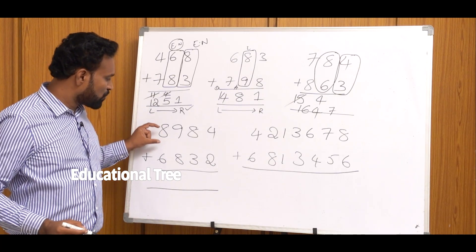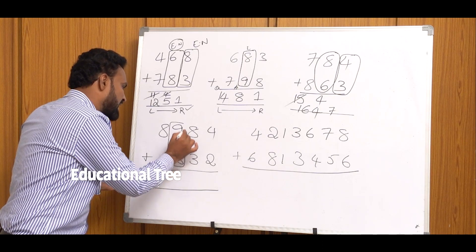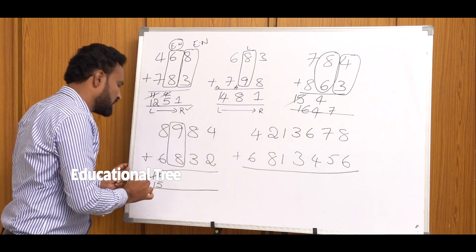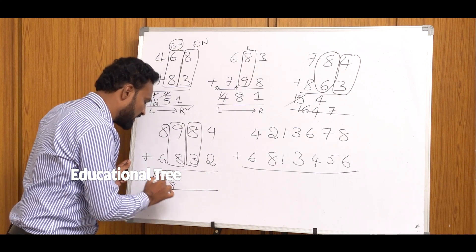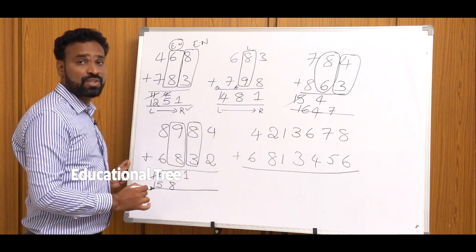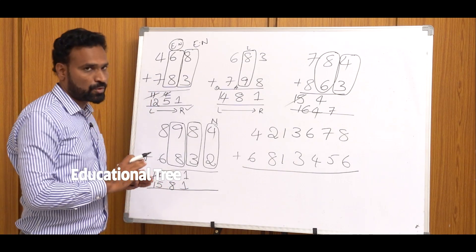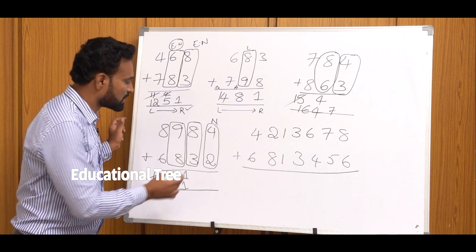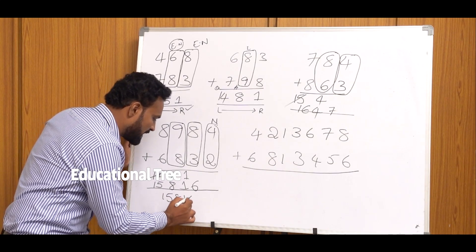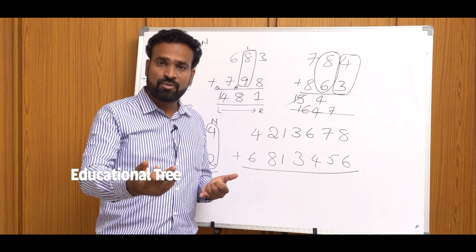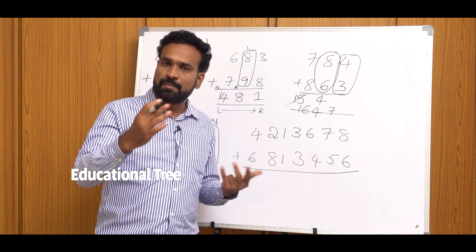Now we have two 4-digit numbers. Sum of 8 and 6 is 14. Next step: Carry Combination — so we take one more than 14, making it 15. End Number of 9 and 8 is 7. Next: carry combination check gives 8. Sum of 8 and 3 gives end number 1. Next step: Non-Carry Combination. The answer is 15816.